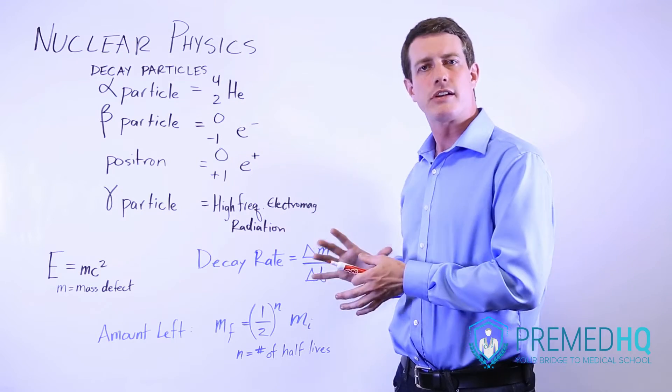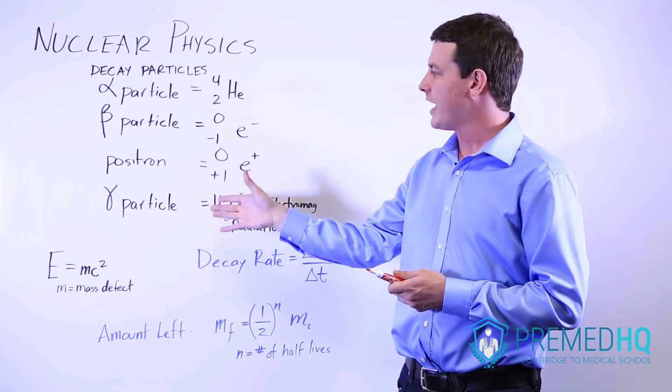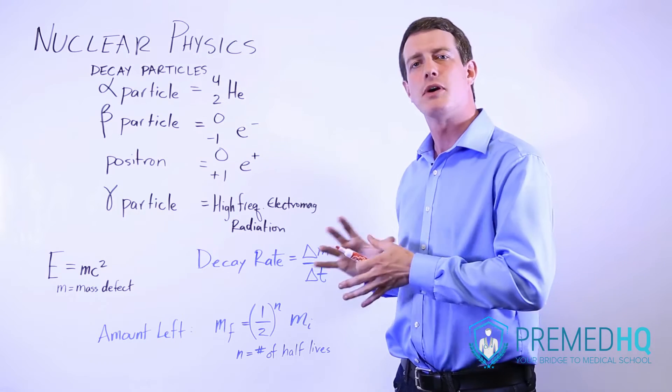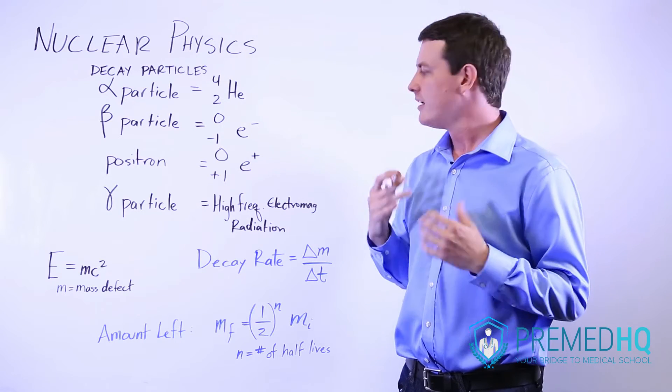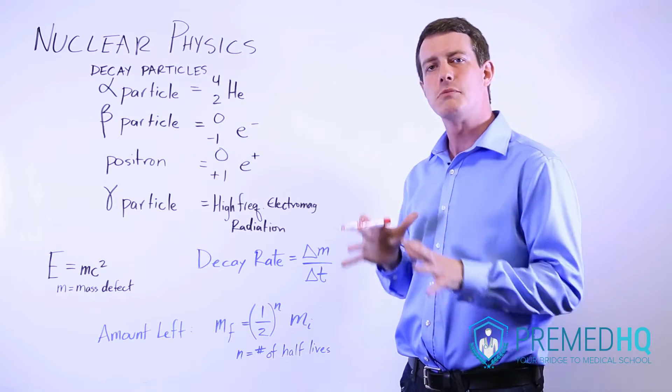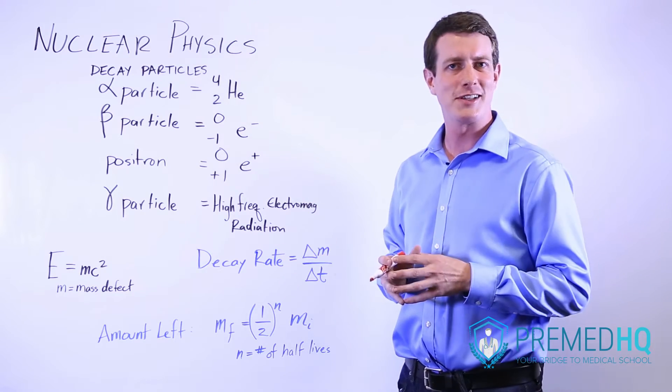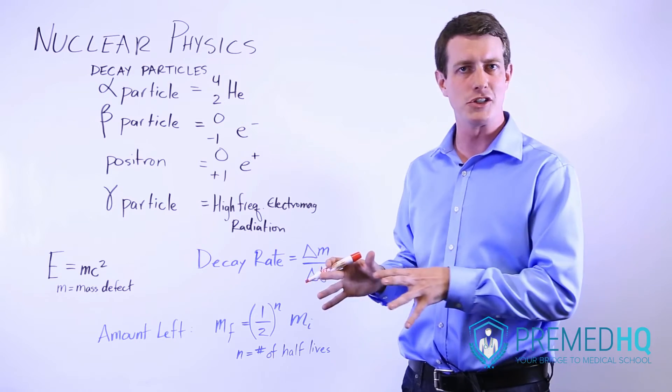It's the absence of an electron, and gamma particles, which are not truly particles, are simply high-frequency electromagnetic radiation, and because they're high-frequency, that also means that they're high-energy, and so that's a very important component of nuclear decay.